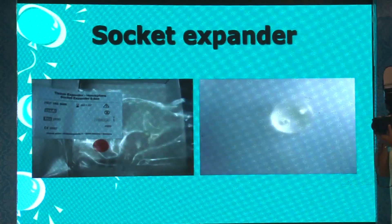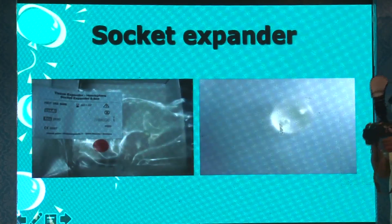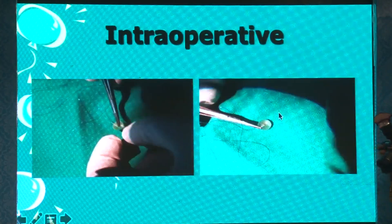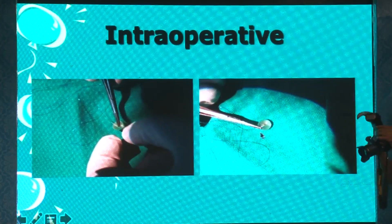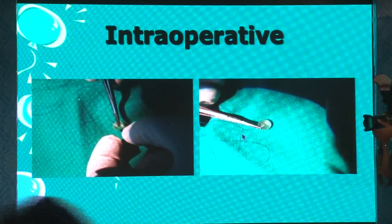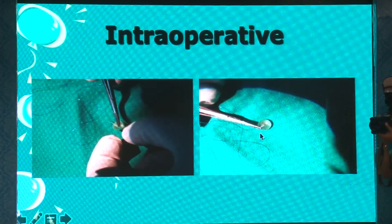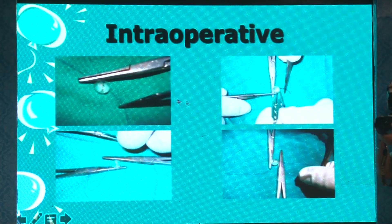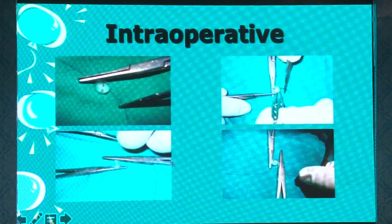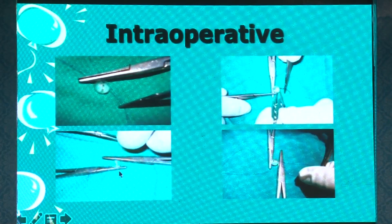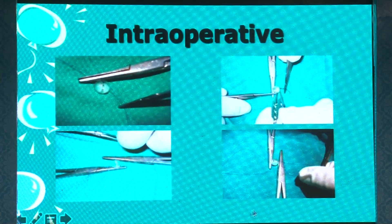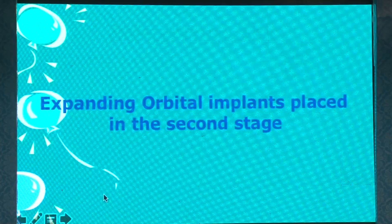In an anophthalmic socket, you can use the socket expanders and then pass sutures through the holes provided. You tie these with a permanent suture like Prolene, but the additional precaution is that you have to leave space on either side for expansion to take place. When tying the sutures, you place an artery forceps in between so the knots are further away, allowing space for the expander to expand.